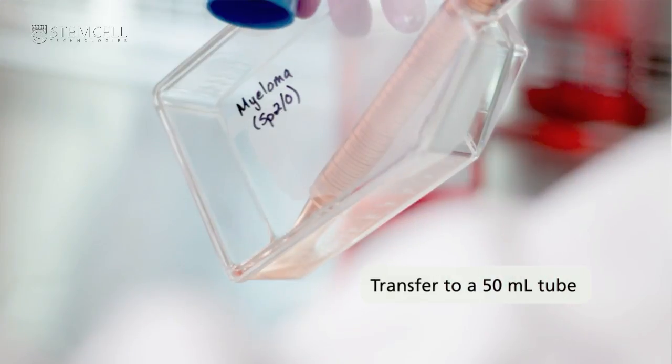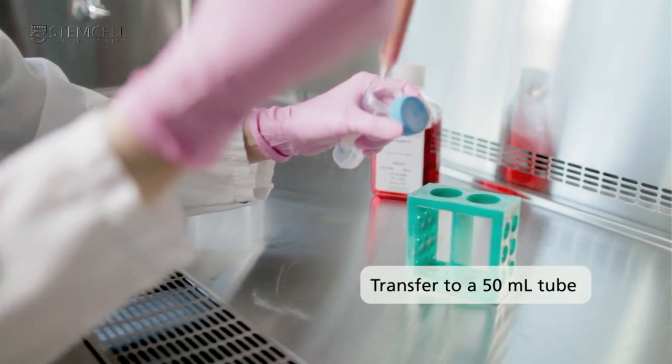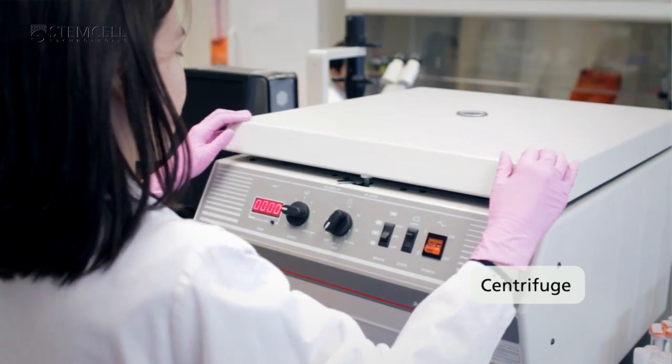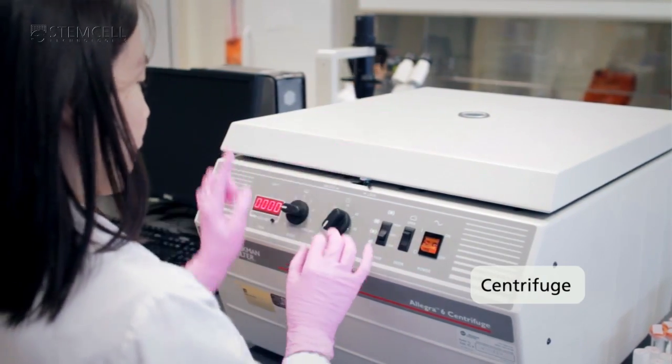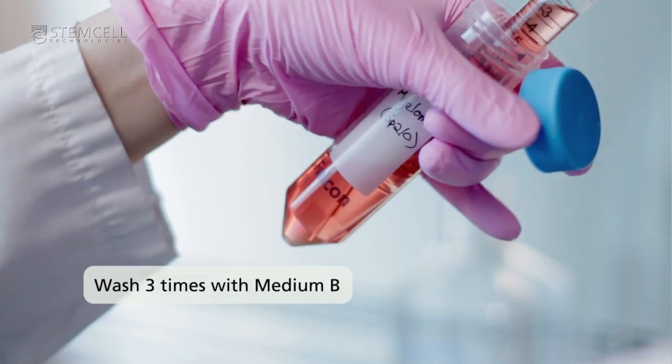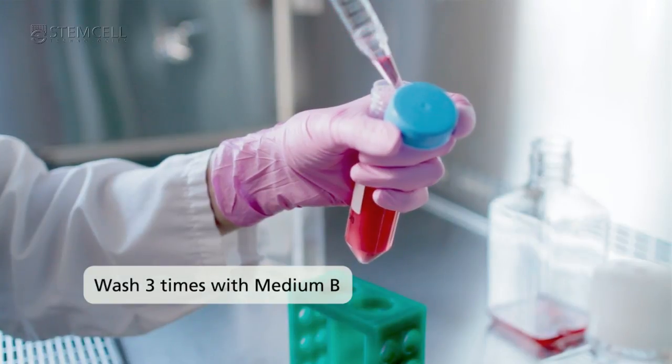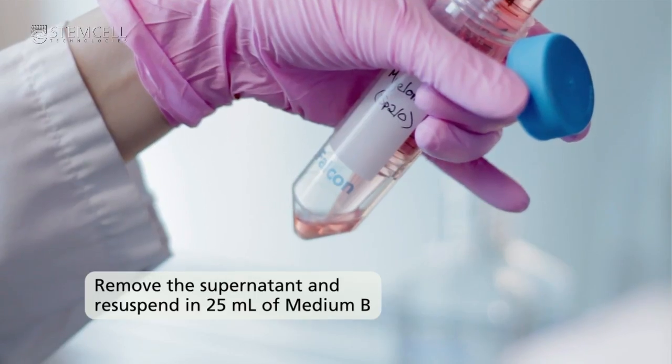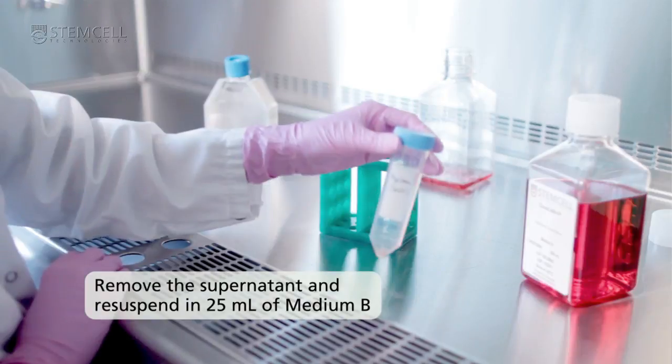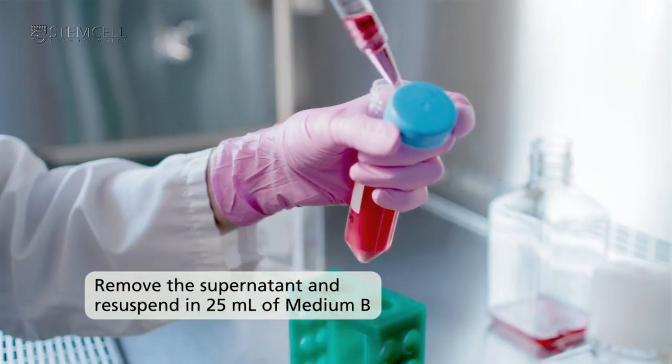Wash three times with medium B. Remove the supernatant by pipette and re-suspend the pellet in 25 mils of medium B.